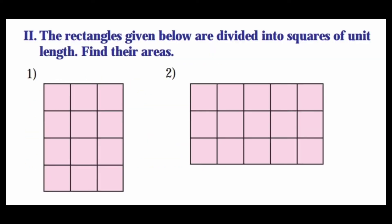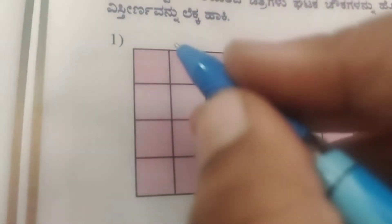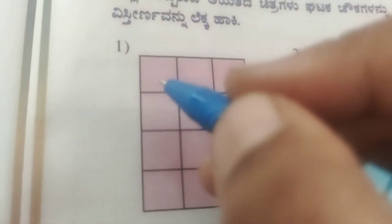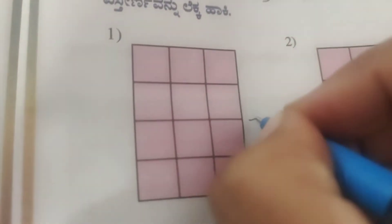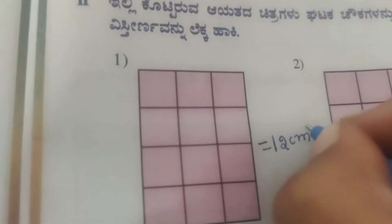Second: the rectangles given below are divided into squares of unit length. Counting the unit squares in the first figure: 1, 2, 3, 4, 5, 6, 7, 8, 9, 10, 11, 12. So the area of this figure is 12 square centimeters.